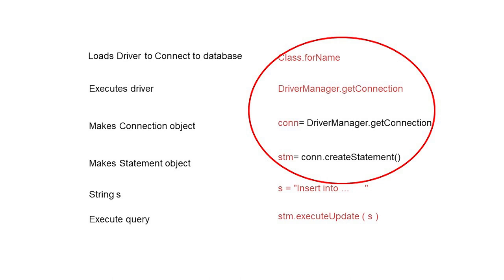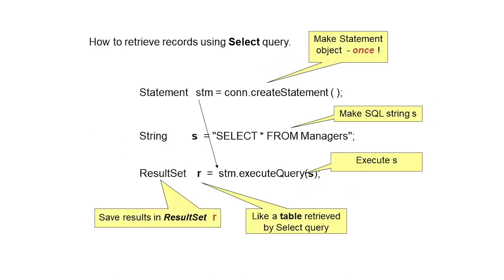Now we see the same four-step pattern again. Class.forName loads the driver — the driver name varies: Oracle's driver is different, PostgreSQL's driver is different, so we write the appropriate driver name. Then DriverManager.getConnection establishes the connection, con.createStatement creates a blank statement, and finally we write the INSERT command string and execute it using executeUpdate.